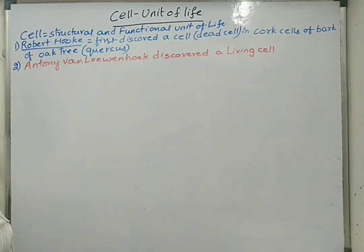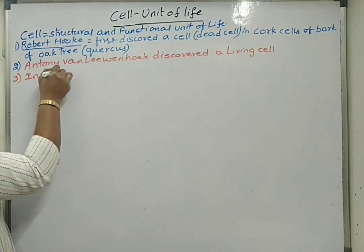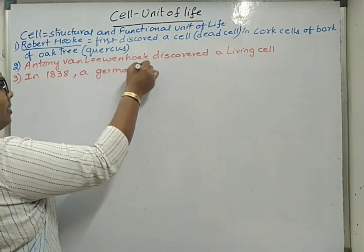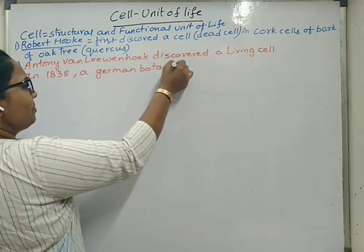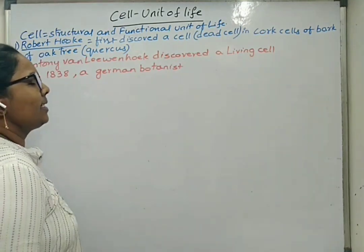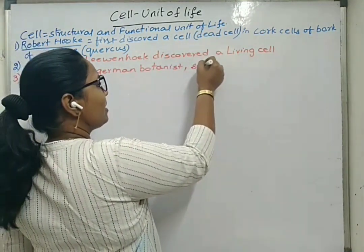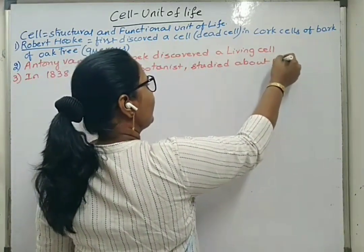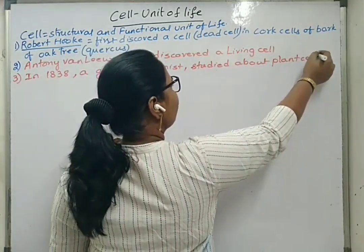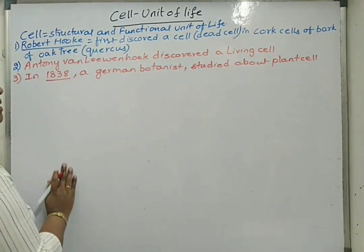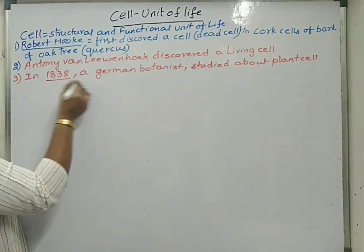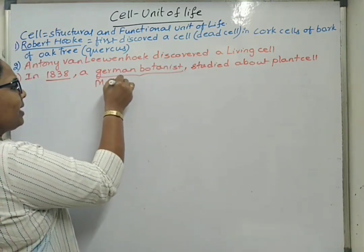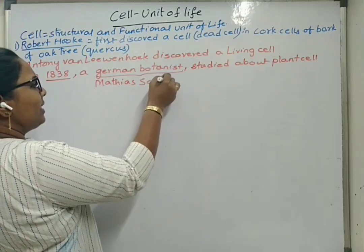Later, in 1838, a German botanist conducted his studies on plant cells. It was in the year 1838. The name of the person is Matthias Schleiden.